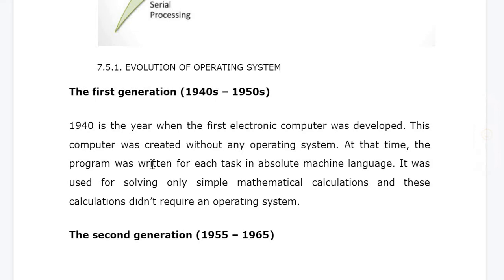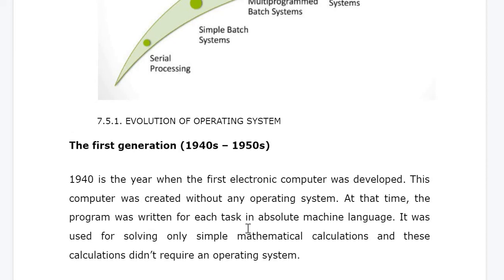At that time, a program was written for each task in absolute machine language — that is zeros and ones. It was used for solving only simple mathematical calculations. It is obvious that if you are writing programs in machine language, you can only perform simple mathematical calculations. These calculations didn't require an operating system. So the first generation of the evolution of operating system was between the 1940s and 1950s, and it was called serial processing.